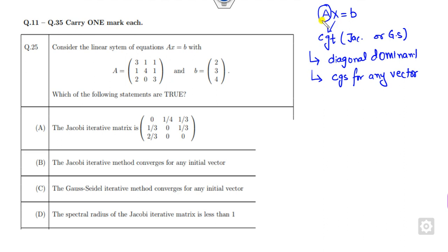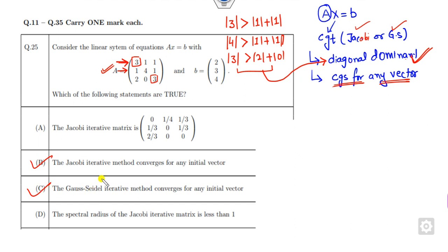The question is how to check whether matrix A is diagonally dominant. Look at the first row - if the absolute value of the diagonal entry is greater than the absolute value of the sum of the others, it's true. Same for the second row, the diagonal entry is 4, which is greater than the sum of others. For the third row, it's 3, which is greater than 2 plus 0. This means matrix A is diagonally dominant. Once it is diagonally dominant, both Jacobi and Gauss-Seidel methods converge for any initial vector. This means B and C are both correct answers.